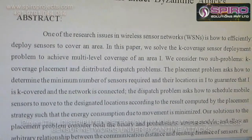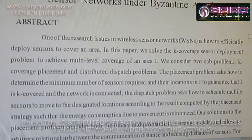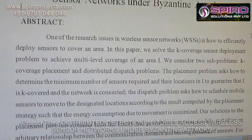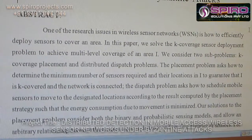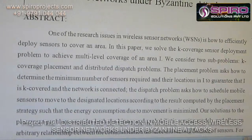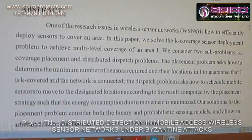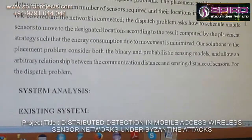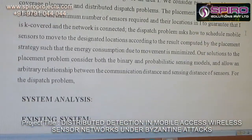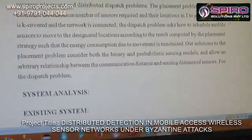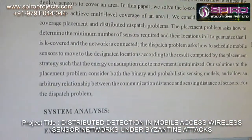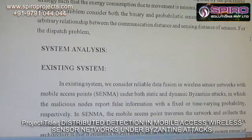One of the research issues in wireless sensor networks is how to efficiently deploy sensors to cover an area. In this paper, we solve the k-coverage sensors deployment problem to achieve multilevel coverage. We consider two sub-problems: k-coverage placement and distributed dispatch problems. Our solution considers both the binary and probabilistic sensing models and follows an arbitrary relationship between the communication distance and sensing distance of sensors.